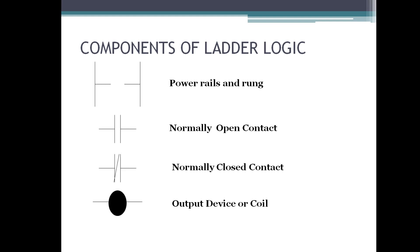Before entering Ladder Logic, we should know the components we are going to use. The first component is power rails and rungs. The two vertical lines are called power rails — the left side is positive and the right side is negative. The horizontal lines are called rungs. There can be multiple rungs, which I'll show in the software.